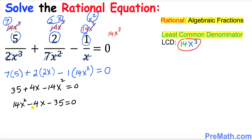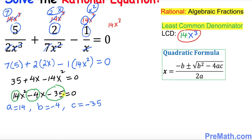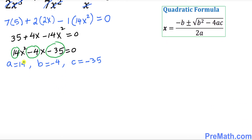To solve this, we are going to apply the quadratic formula. Our a value is 14, our b value is negative 4, and our c value is negative 35. Let's go ahead and apply these values into the quadratic formula.